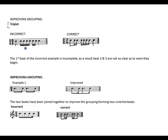Improving grouping — triplet, same as 3-form. The first example is incorrect: it starts with a quaver, then semiquavers, then another group of semiquavers, and the last beat is a crochet. This is incorrect because the first beat does not add up to a crochet. We must find a 'little friend' for it so that it adds up to a crochet. Grouping the quaver with the first two semiquavers makes up a crochet — half beat plus quarter beat plus quarter.